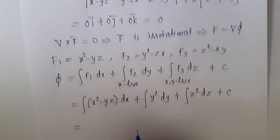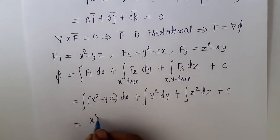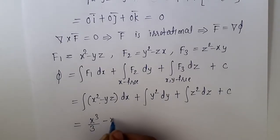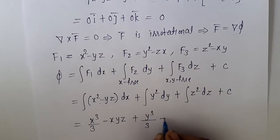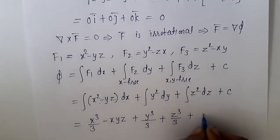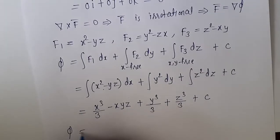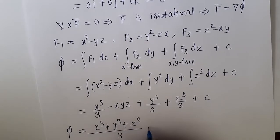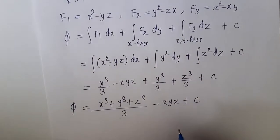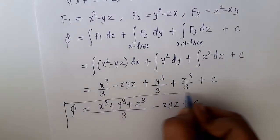So it equals: integral of x² dx = x³/3, minus xyz from the yz term, plus integral of y² dy = y³/3, and integral of z² dz = z³/3, plus constant c. So we get φ = (x³ + y³ + z³)/3 - xyz + c. This is our scalar potential φ.